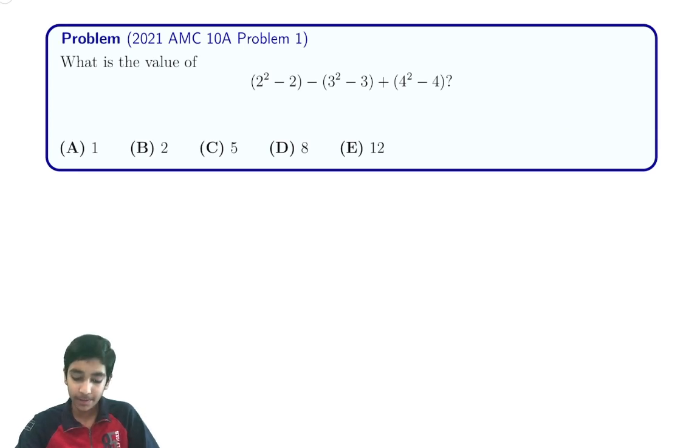Hi everyone! Today we're going to be looking at 2021 AMC 10A Problem 1. We want to find the value of (2² - 2) - (3² - 3) + (4² - 4).